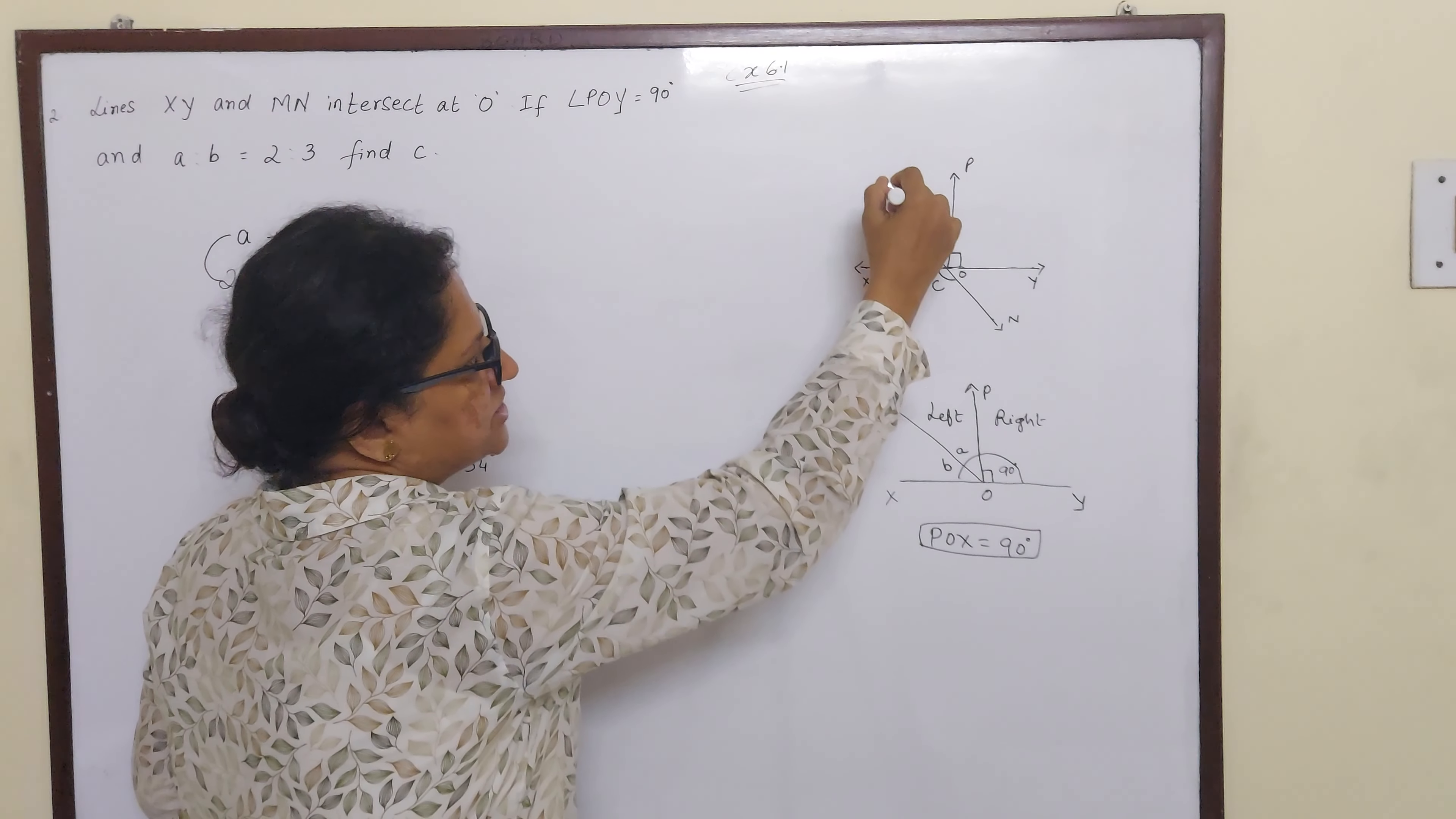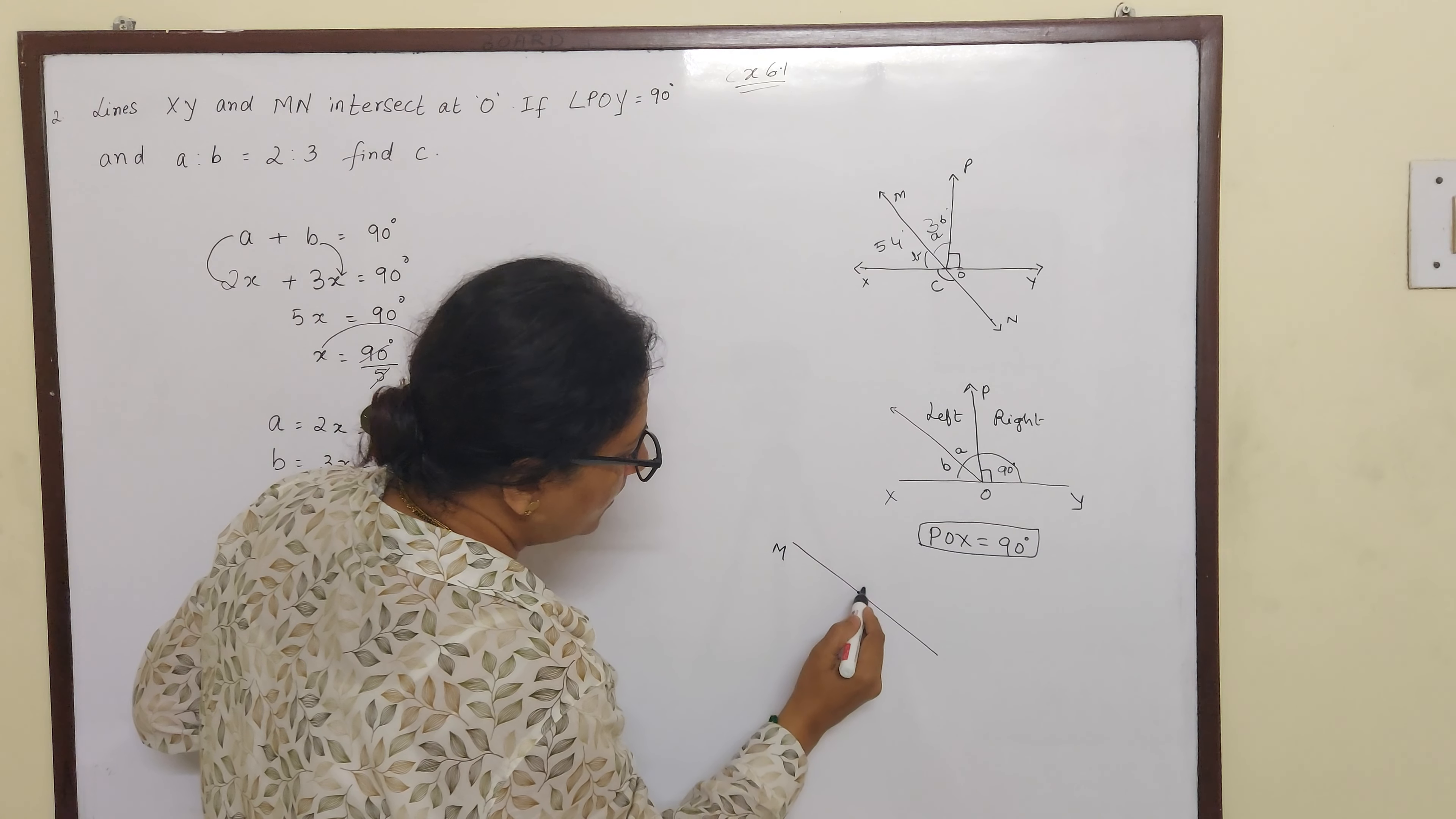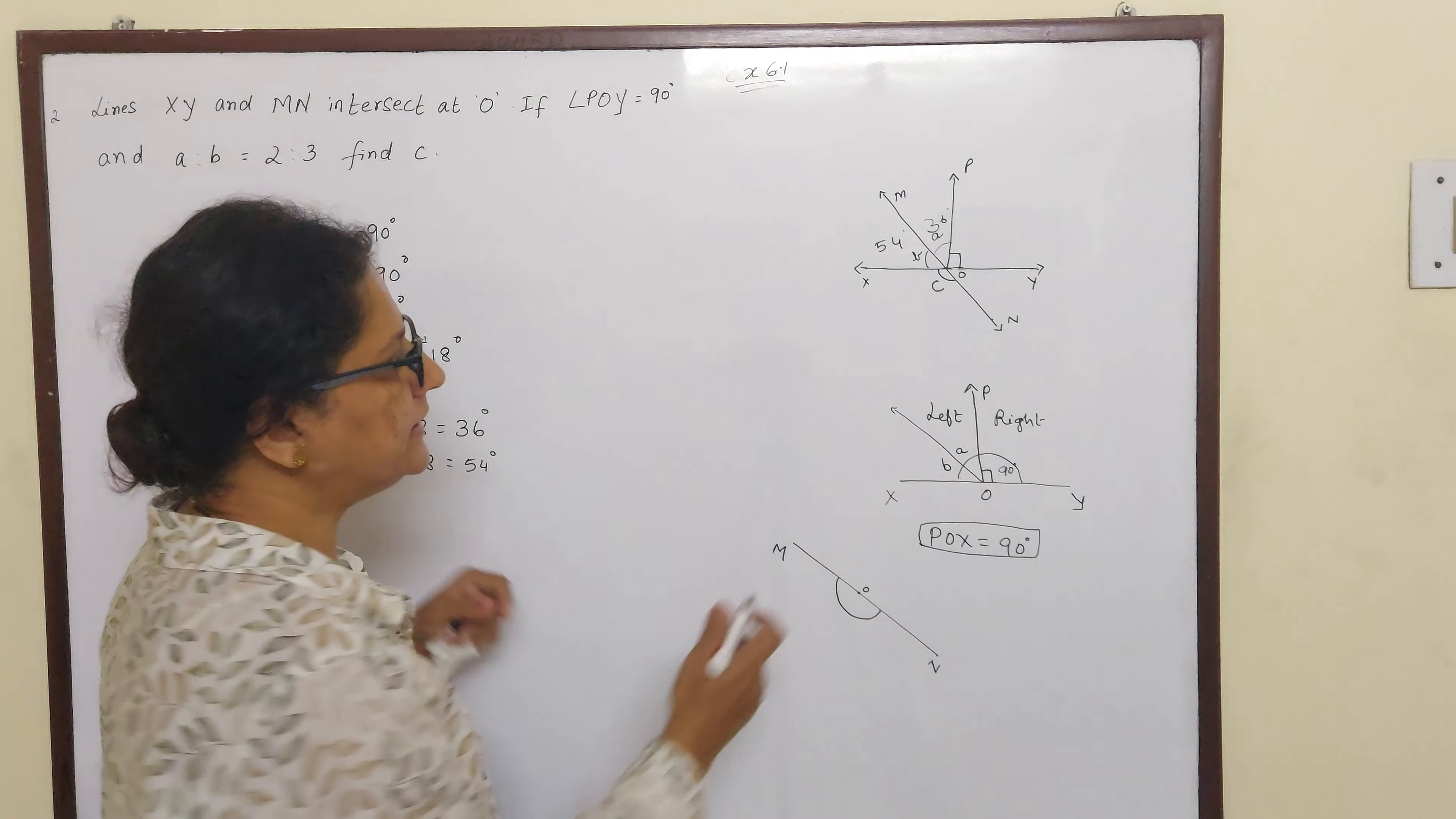Now if you see this shape children, the shape of this M, O, N, they form a straight line. M, O, N. So what is this? This is a straight line. So the angle formed in this also will be 180 degrees.